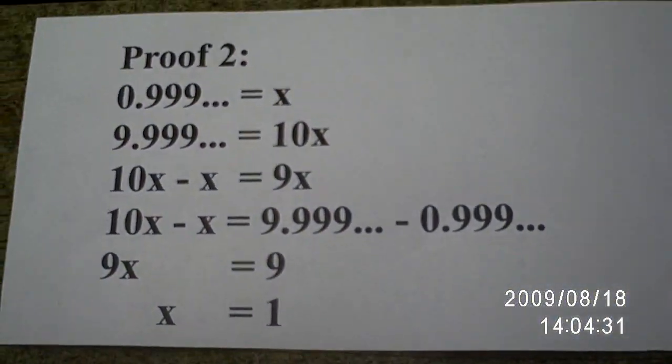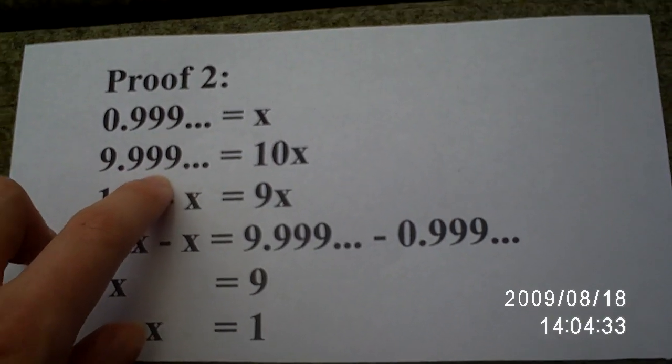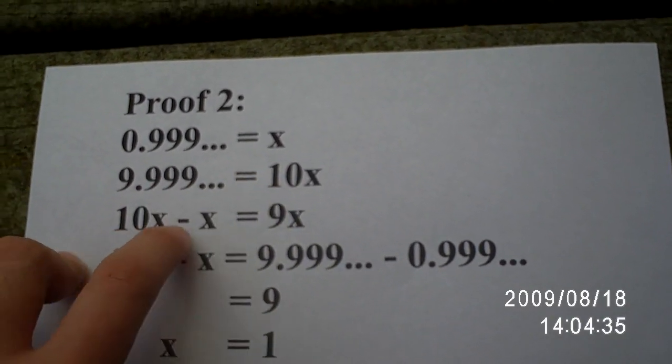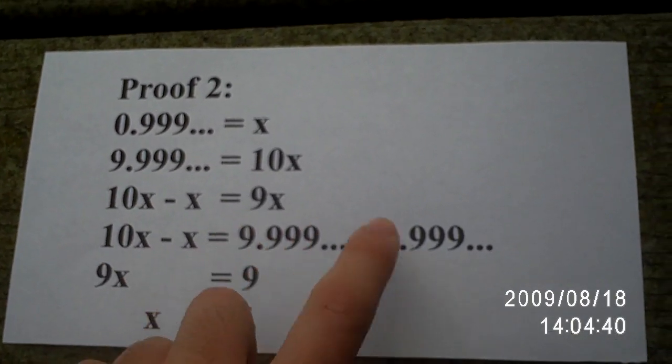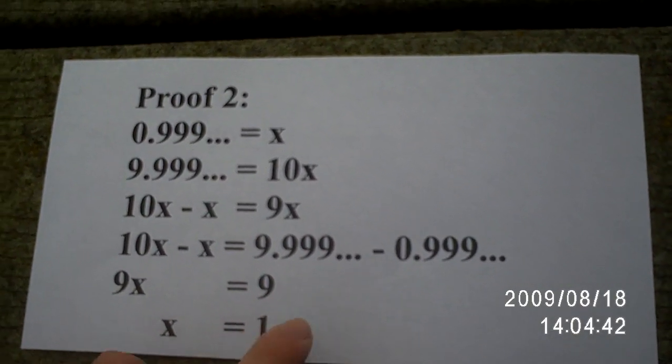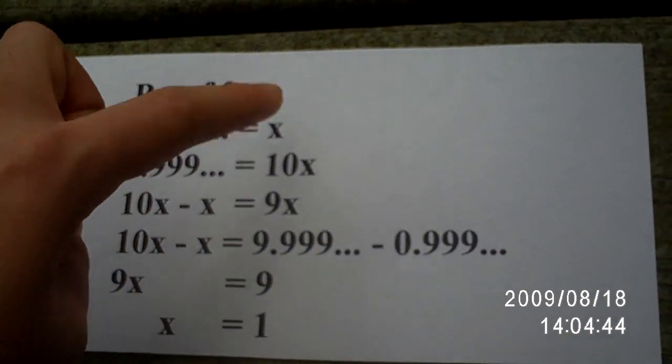0.9 repeating is equal to x, simple enough. Multiply both sides by 10. 10x minus x equals 9x always, no matter what x is. And that substitution, 9x equals 9, x equals 1. Simple enough.